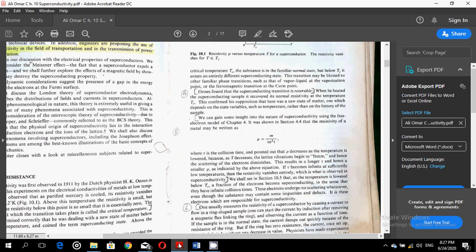This results in a longer tau and hence a smaller rho as indicated by the above equation. If tau becomes infinite at sufficiently low temperatures, then the resistivity vanishes entirely, which is what is observed in superconductivity. So we can explain superconductivity a little bit based on this equation as well.